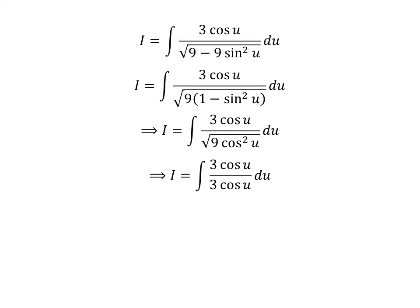Square root of 9 times square of cosine of u is equal to 3 times cosine of u. So I is equal to the integral of 3 times cosine of u upon 3 times cosine of u. Cancelling out the common factor of 3 times cosine of u in the numerator and denominator gives us I is equal to the integral of 1 with respect to u. We know the integral of 1 is equal to u, so I is equal to u plus capital C.